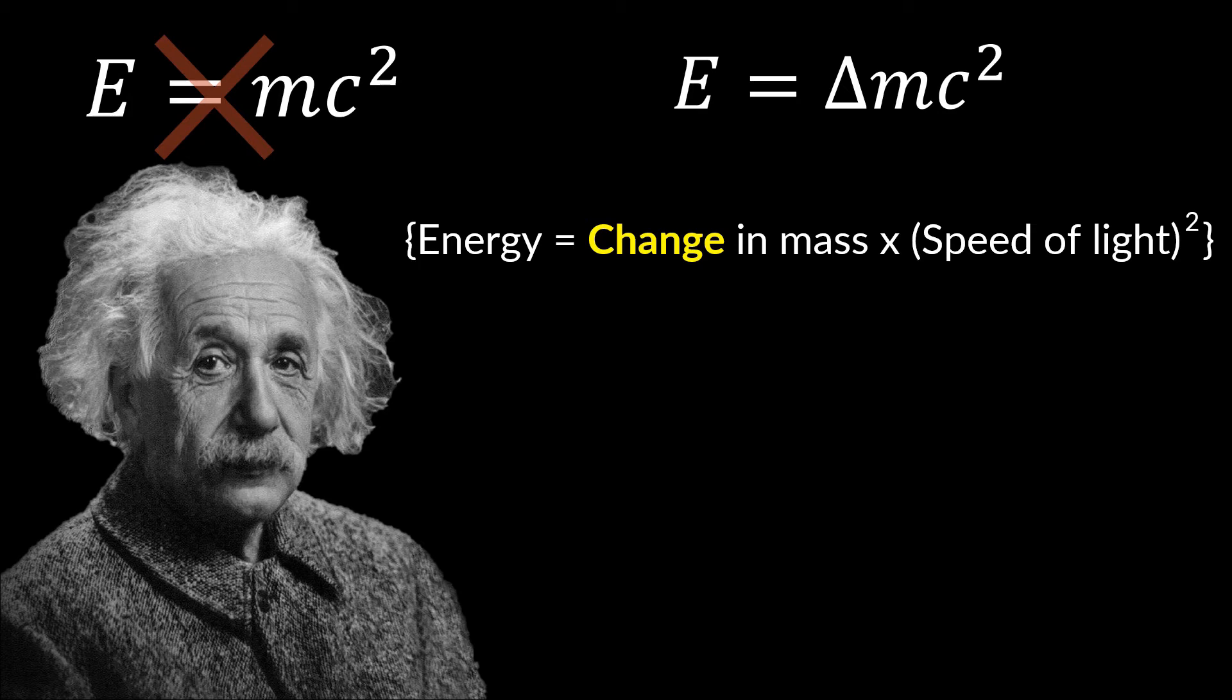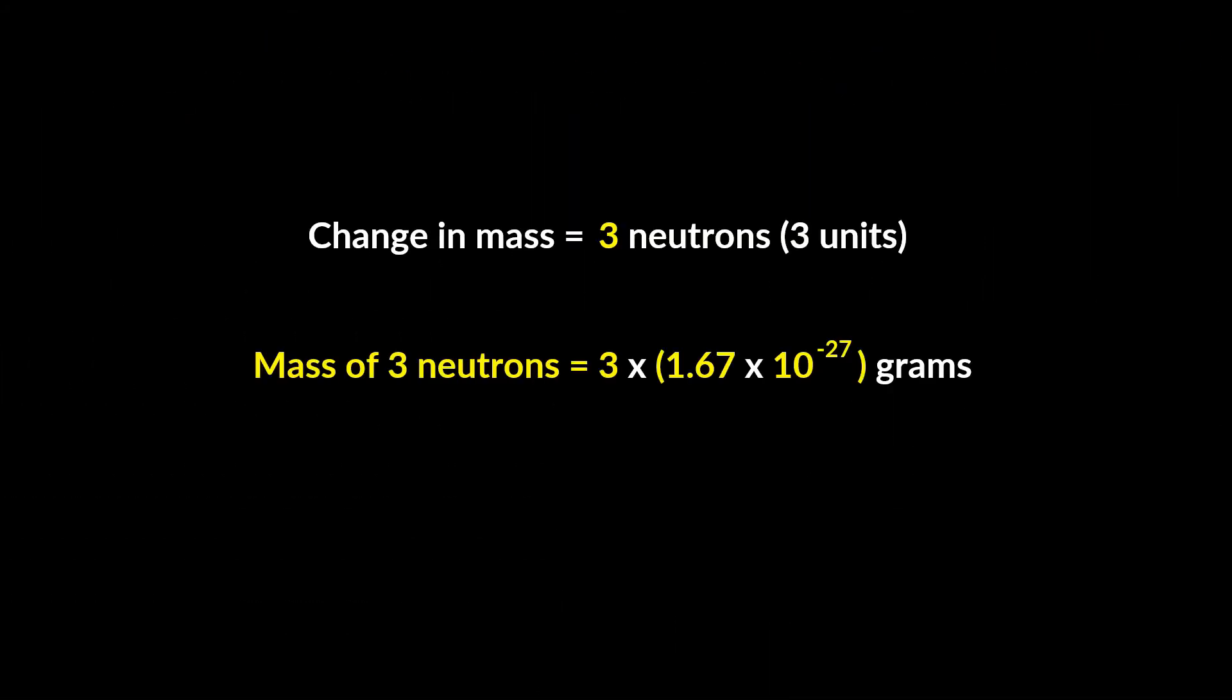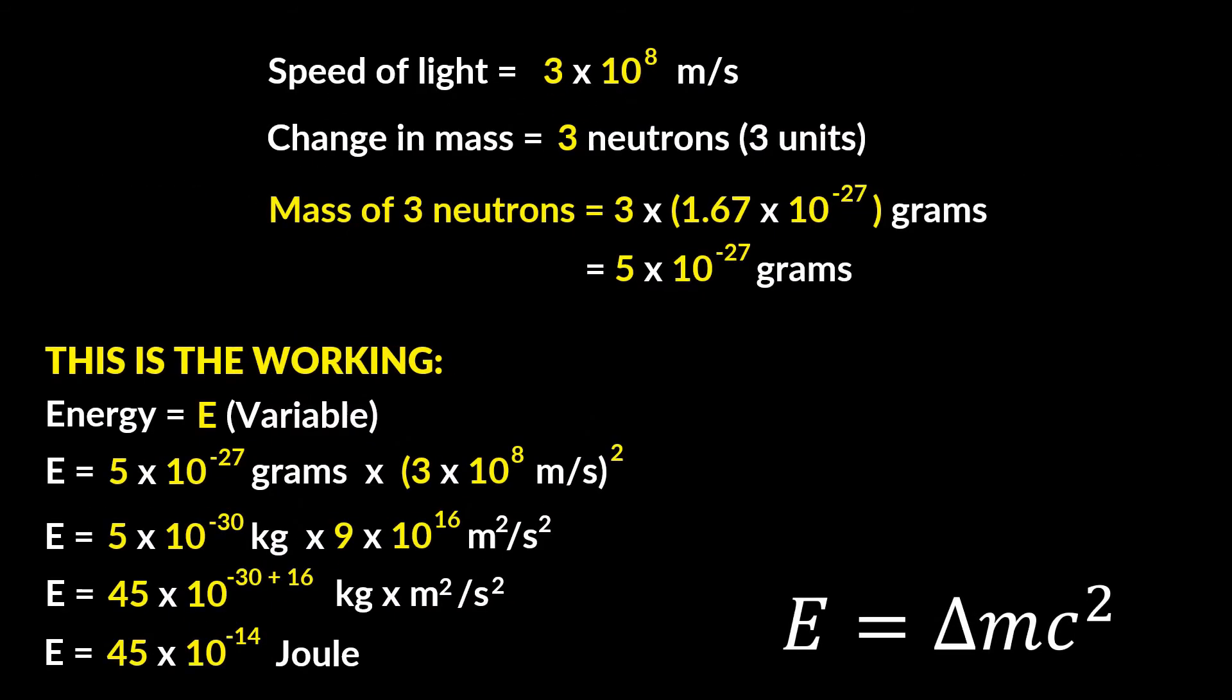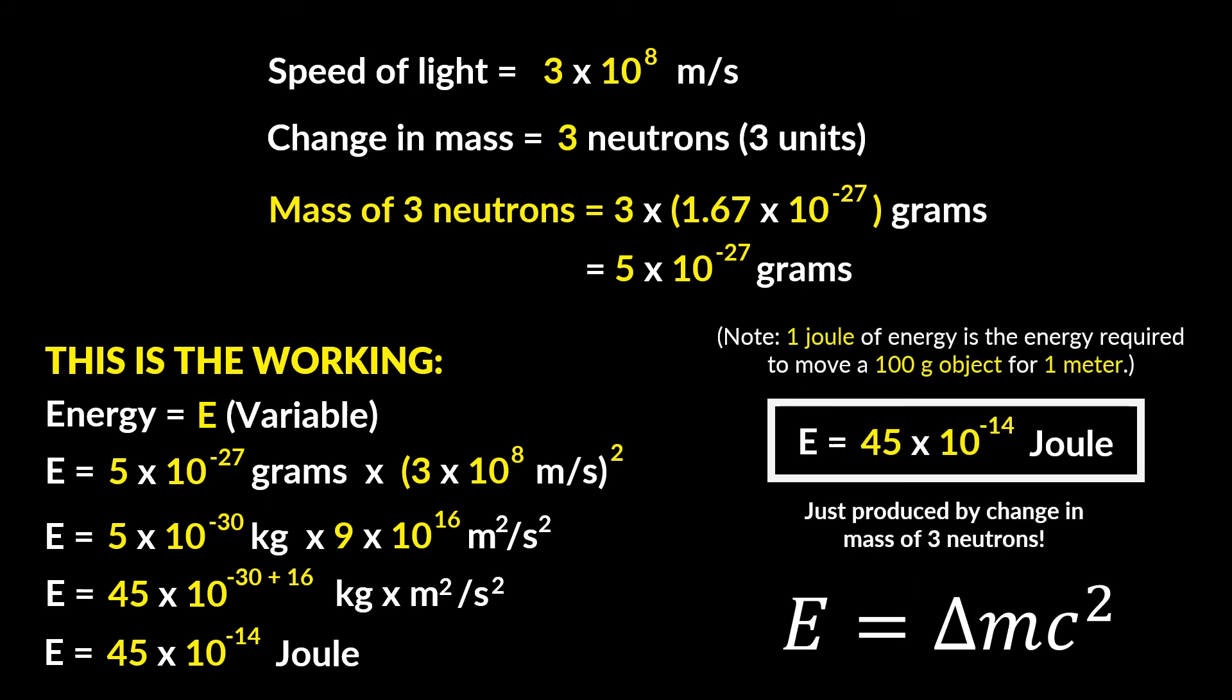So the change in mass is of three neutrons or precisely the number of grams you see on screen. Thus, the energy produced is that number multiplied by the square of the speed of light. Thus, the energy produced is what you see on screen.